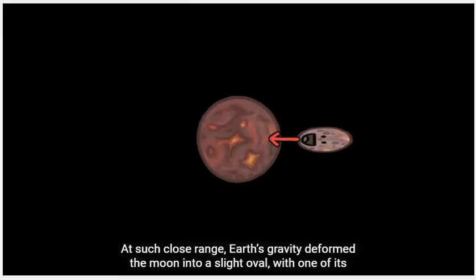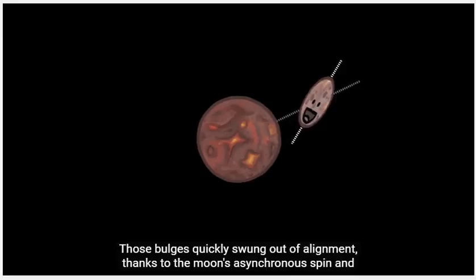At such close range, Earth's gravity deformed the Moon into a slight oval, with one of its bulges facing Earth. Those bulges quickly swung out of alignment thanks to the Moon's asynchronous spin and orbit.